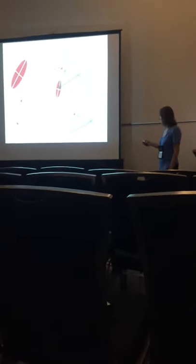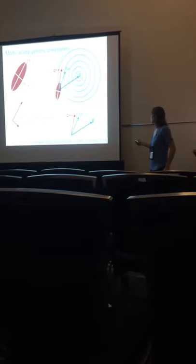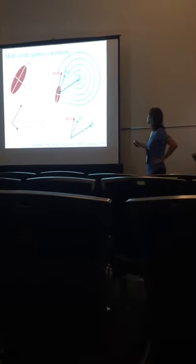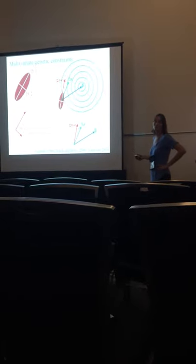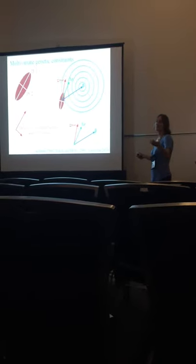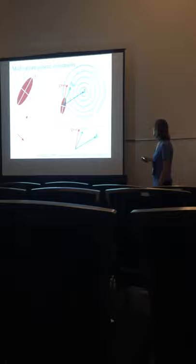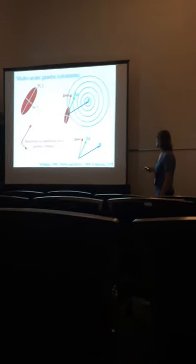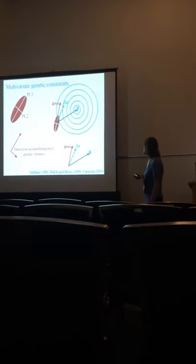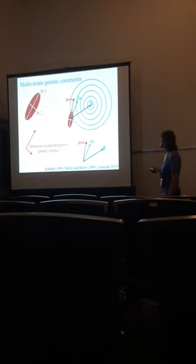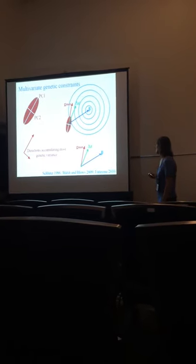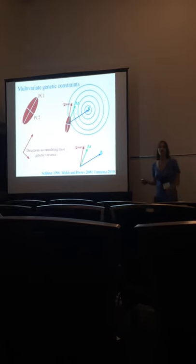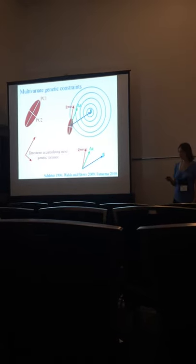To illustrate the response to selection graphically: you have the population, and you have where selection is pulling, but the response to selection will not necessarily be in the same direction as selection. As you can see from the direction of these vectors, the response to selection is much more correlated with gmax, which is the maximum axis of variance, and not with selection. This configures a multivariate genetic constraint.